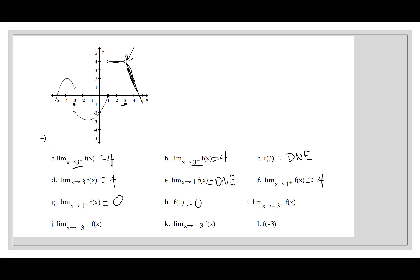Now let's look at negative 3. Negative 3 from the negative side stops at a y value of 1. Negative 3 from the positive side stops at a y value of negative 2. The limit when x goes to negative 3 does not exist because the left gave 1 and the right gave negative 2 — those are not equal. And f of negative 3 is negative 1. That part is completely different from the limits — for the function value, we only look at what happens when we plug negative 3 in. That's part 1; come back for part 2 and we'll continue this discussion.